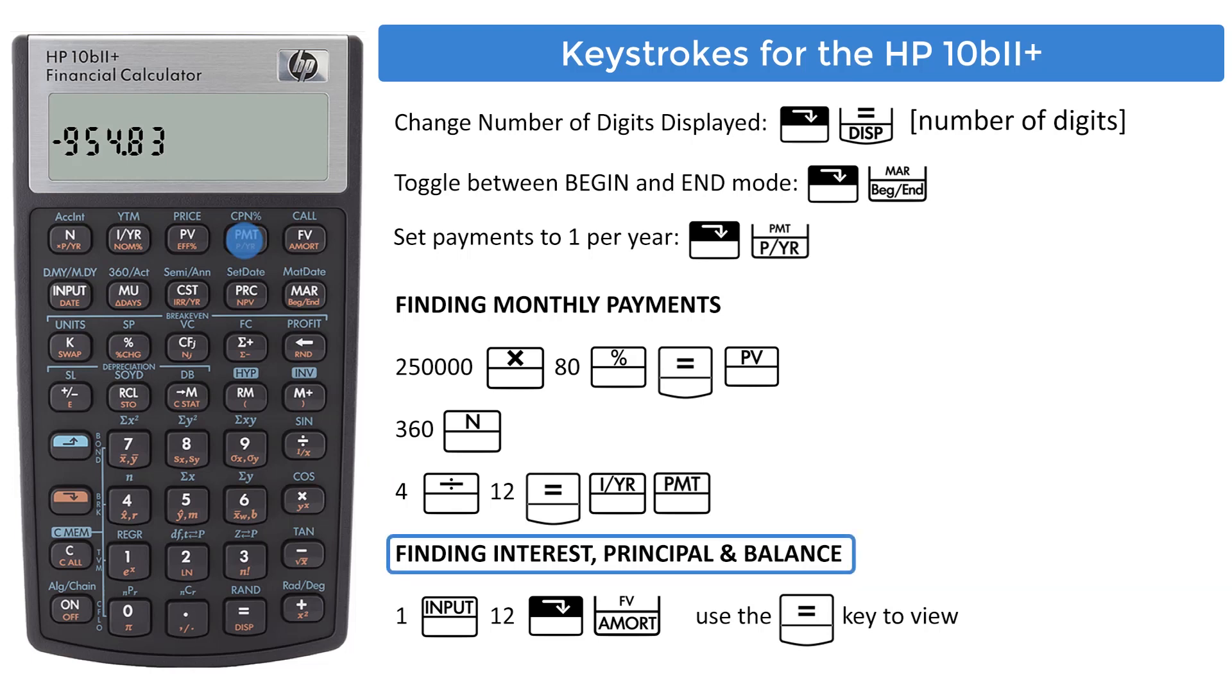For finding the amortization information from the first 12 months, enter 1, press the key marked INPUT, 12, downward shift, AMORT. You see periods 1 through 12. And using the equals key, you can toggle through the amount applied to principal, interest, and balance remaining.